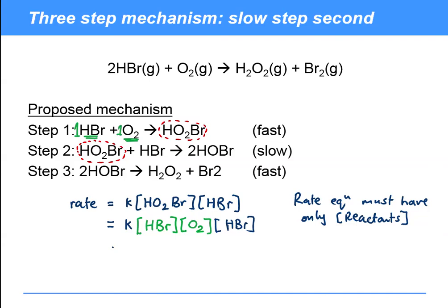So overall what I've got is a second order reaction with respect to hydrogen bromide and a first order reaction with respect to oxygen, overall order 3. As a hint, whenever you've got reactions with order more than 2, you're going to be expecting something like this to be happening because otherwise a trimolecular slow step is incredibly unlikely.